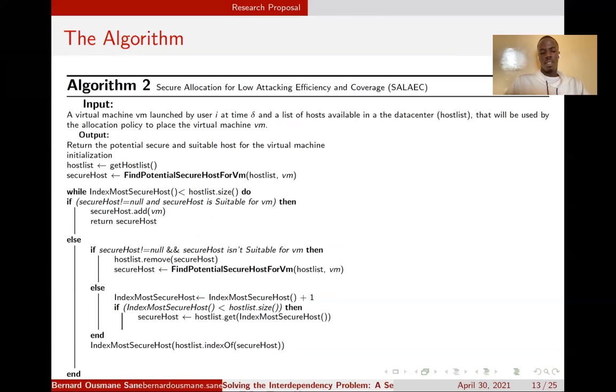After we find the secure host, we do the allocation using algorithm two. If the secure host is different from null but is not suitable—that means it's full—we repeat the process with algorithm one without this current secure host. Otherwise, we launch the VM on that host.